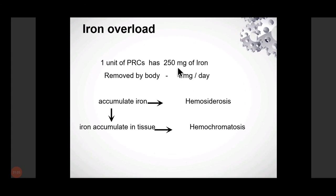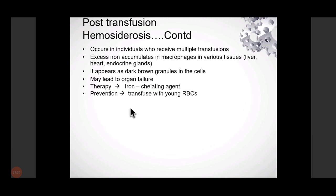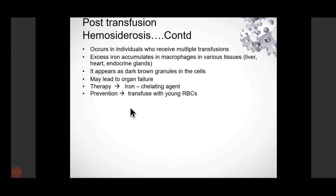Some patients develop iron overload, particularly in thalassemia with multiple transfusions. One unit of packed red cells contains 250 mg of iron. On chronic transfusions, iron accumulates — this is called hemosiderosis; if in tissues, it is hemochromatosis. The heart, liver, and other organs are affected. Symptoms: muscle weakness, fatigue, weight loss, mild jaundice, and anemia. Iron chelation therapy is the treatment.